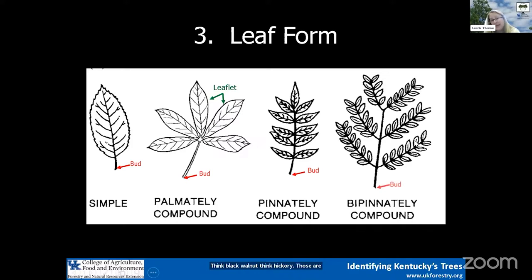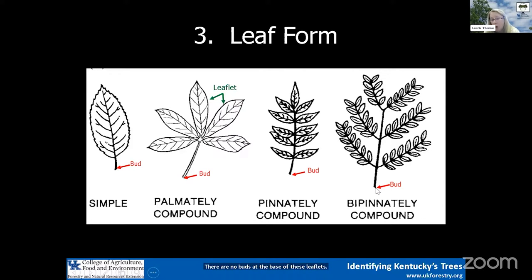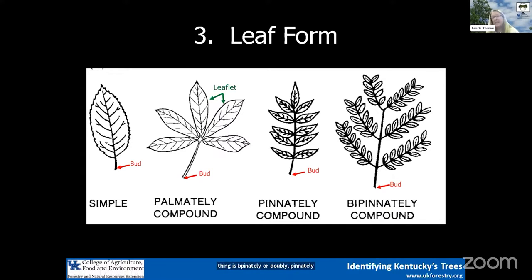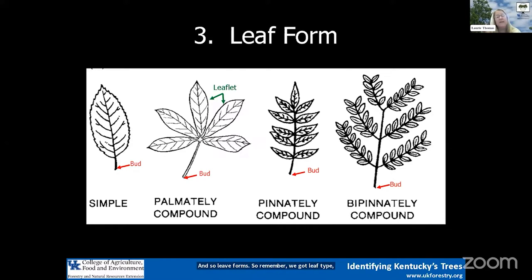And then this big leaf here is bipinnately or doubly pinnately compound — there are no buds at the bases of the leaflets, with the bud all the way down. An example of this is our Kentucky coffee tree, which has a really big leaf. So remember: we have leaf type — needle or broad leaf; leaf arrangement — alternate or opposite; and leaf form — simple or compound.